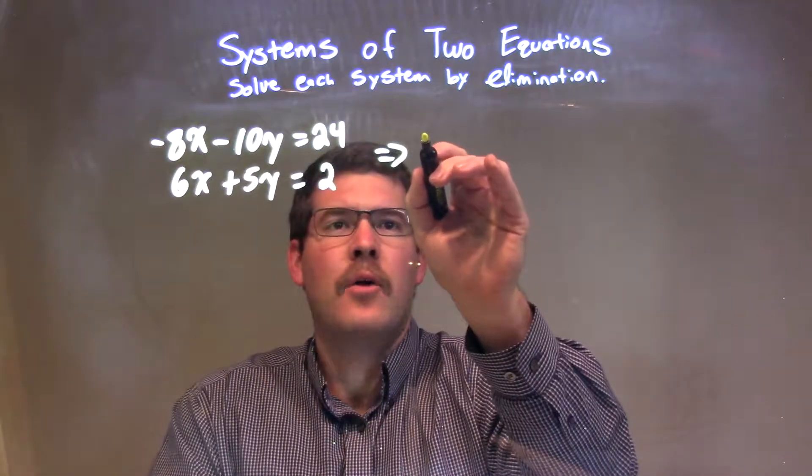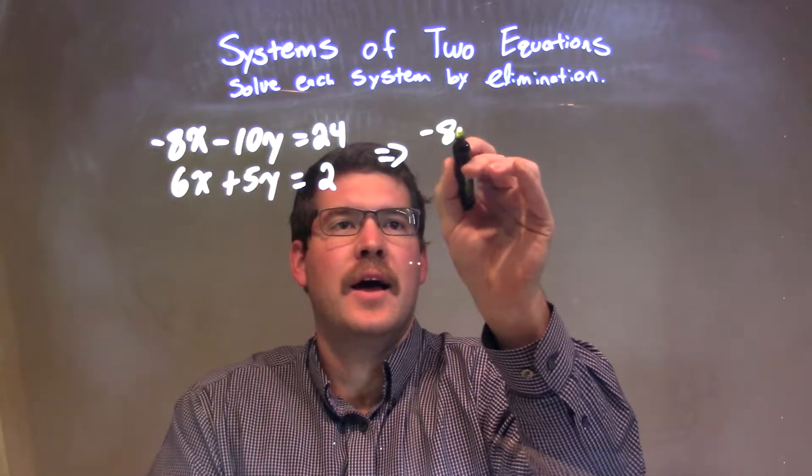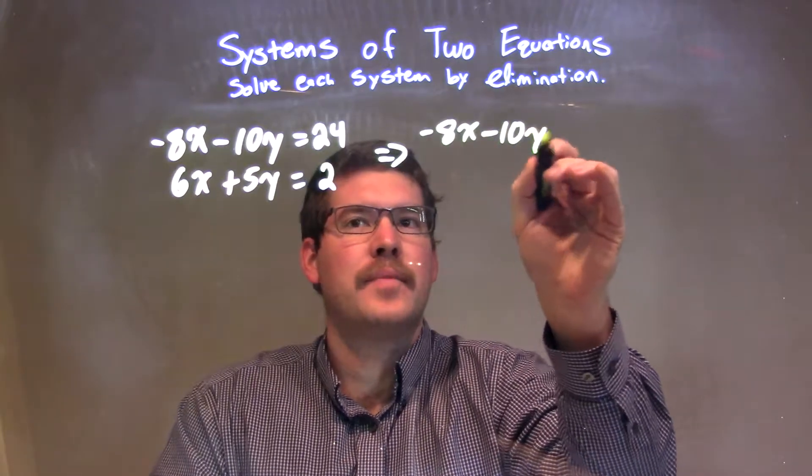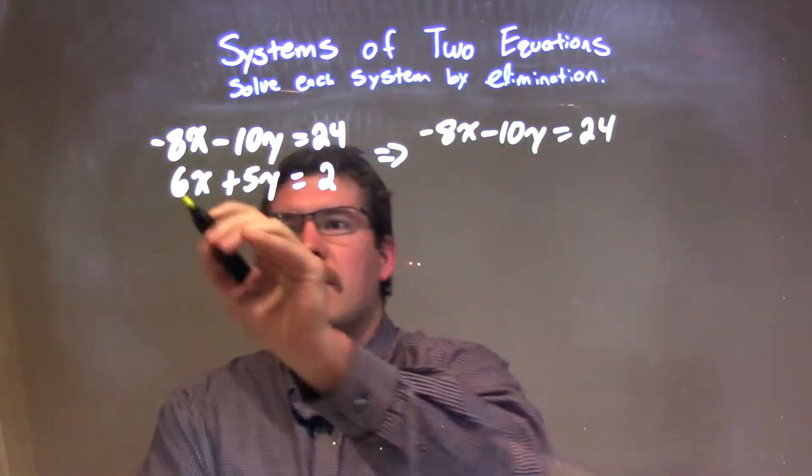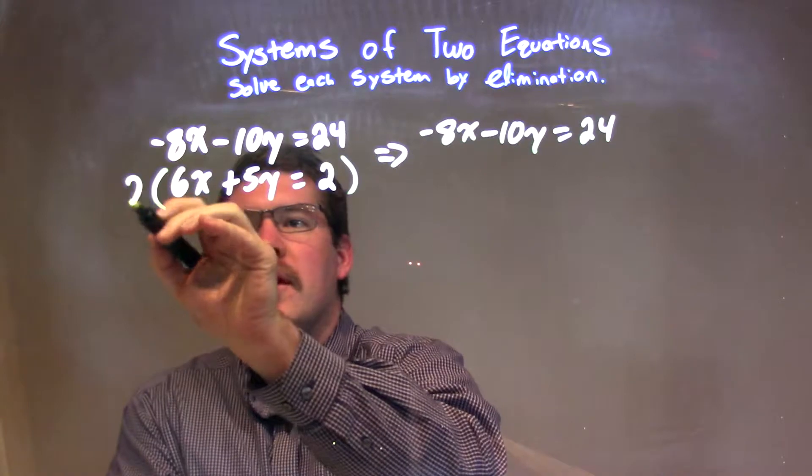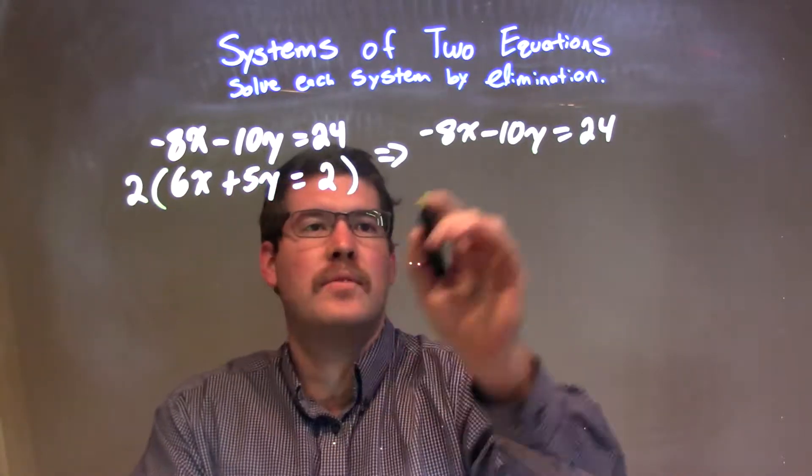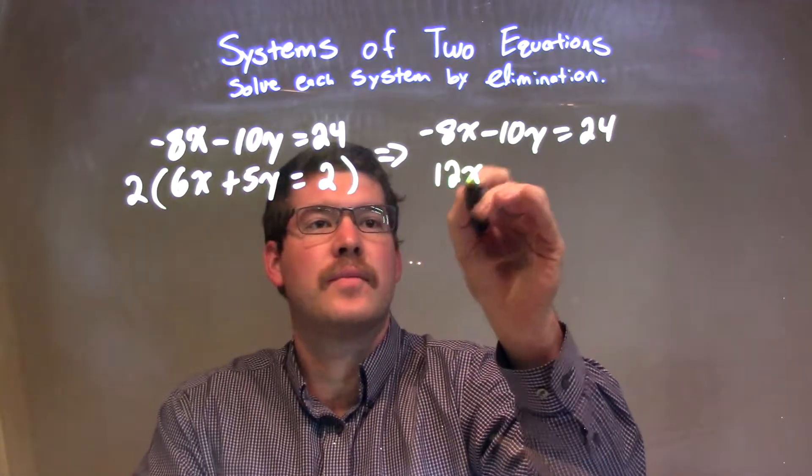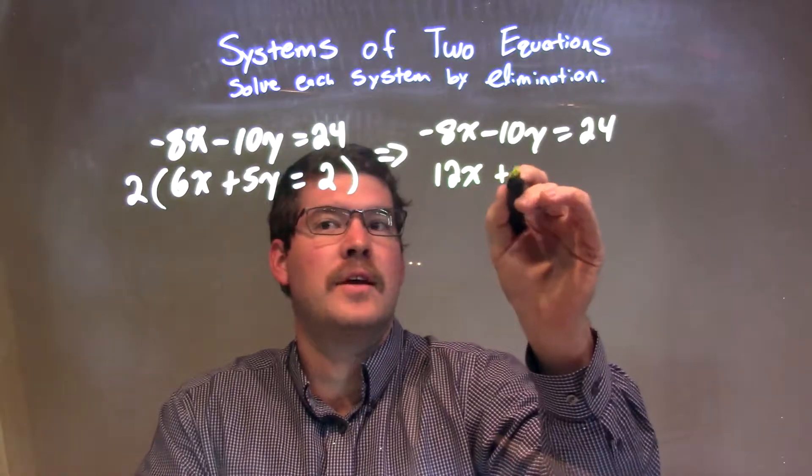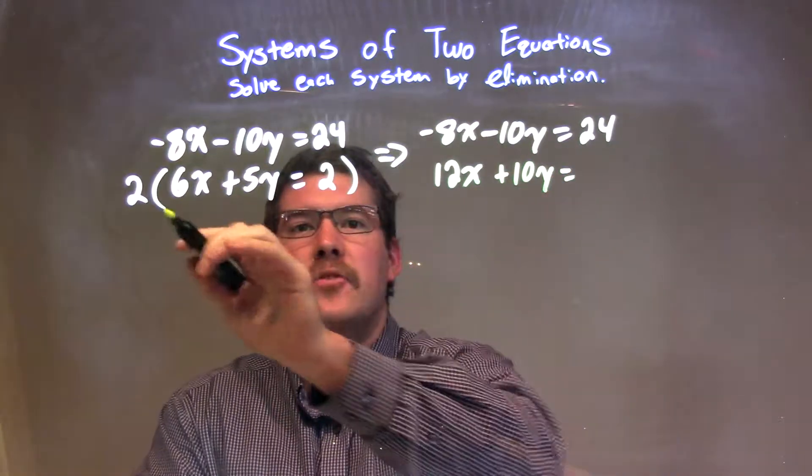Let's rewrite the first equation: negative 8x minus 10y equals 24. The second equation, I'm going to multiply the whole thing by 2. 2 times 6x is 12x, and 2 times 5y is 10y, and 2 times 2 is 4.